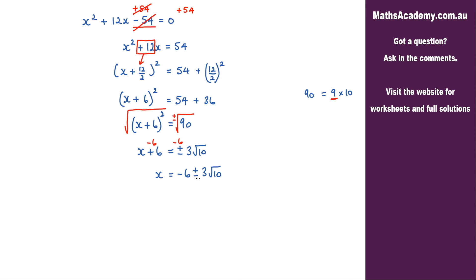So those are my two answers. I've got negative 6 plus 3 root 10 and negative 6 minus 3 root 10. If you found this video useful then remember to give me a quick thumbs up and if you would like to be notified when I release new videos then hit that subscribe button and remember to click on the little notification bell.